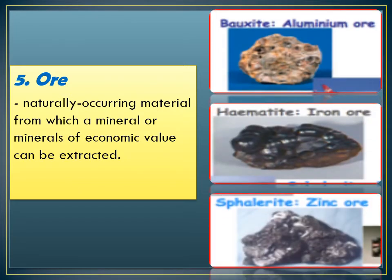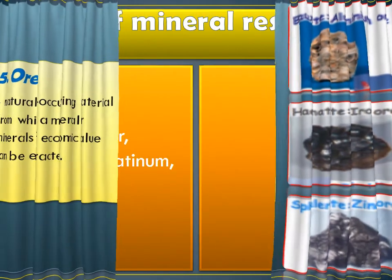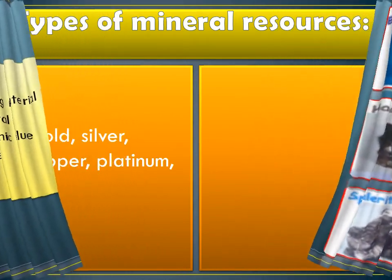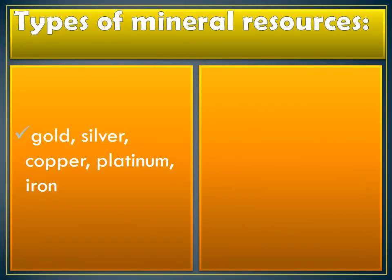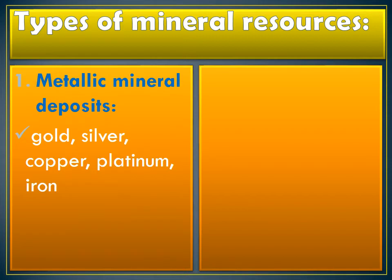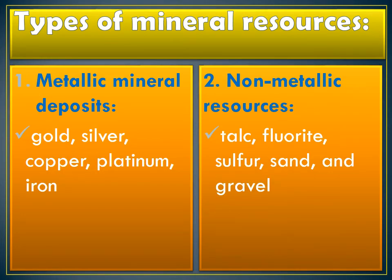Talking about mineral resources, we can generally categorize them into two: whether they are metallic or non-metallic. Metallic minerals are, of course, the minerals that are made up of metals, just like gold, silver, copper, platinum, and iron. For non-metallic resources, they are non-metals, just like talc powder, sulfur, sand, and so on and so forth.